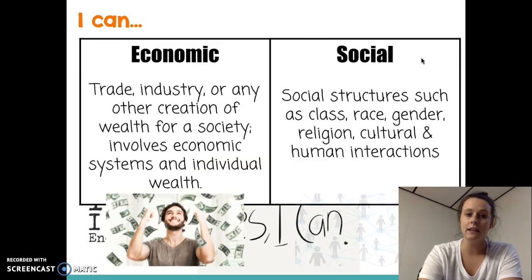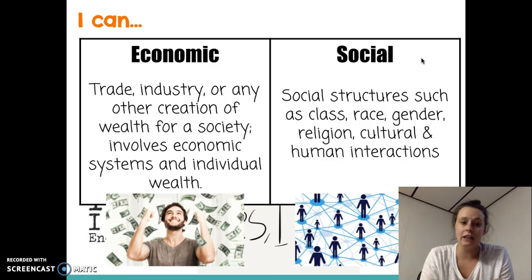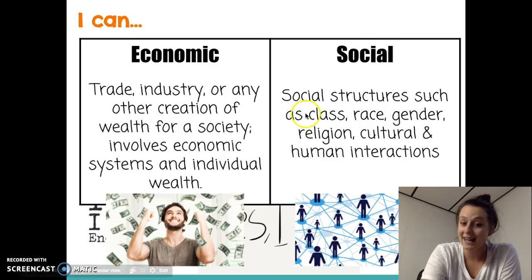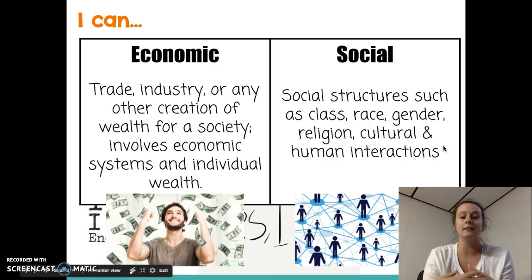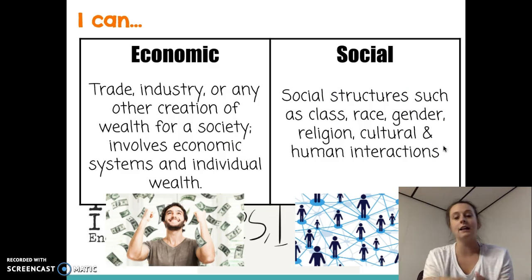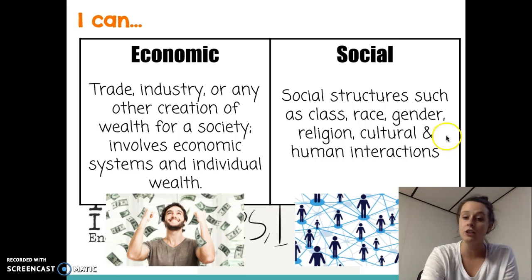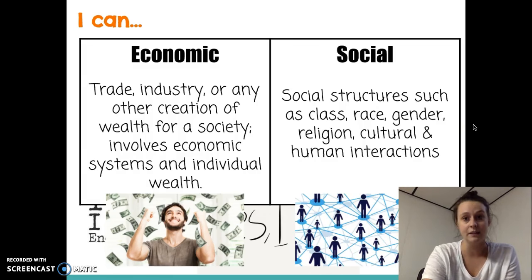Really quickly, I want to clarify the difference between economic and social. Economic means things having to do with money and industry. And social means social structures like class — low, middle, or high class — race, gender, religion, and how people act and interact with each other. Keep that in mind as we move forward.